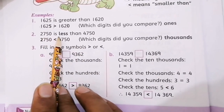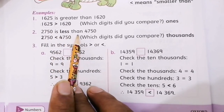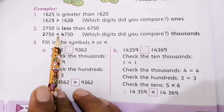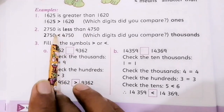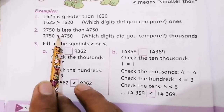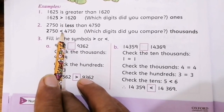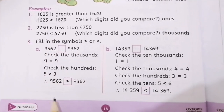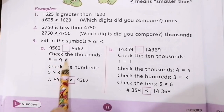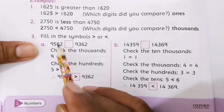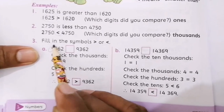Similarly, 2750 is less than 4750. This is the less than sign.